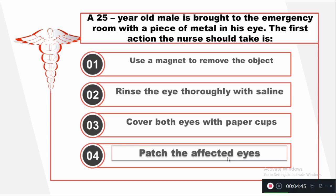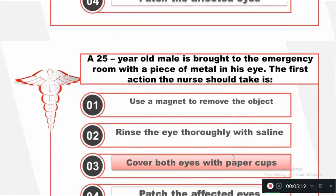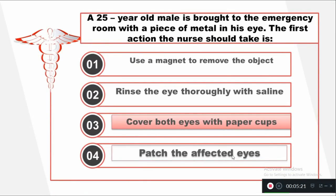Question number six: A 25-year-old male is brought to the emergency room with a piece of metal in his eye. The first action the nurse should take is — Option one: Use a magnet to remove the object. Option two: Rinse the eye thoroughly with saline. Option three: Cover both eyes with pepper cups. Option four: Patch the affected eye. The right answer is to cover both eyes with pepper cups.